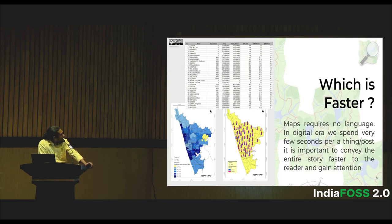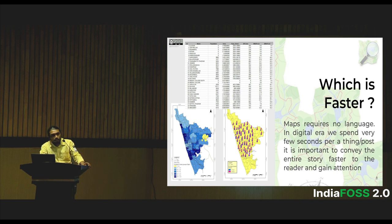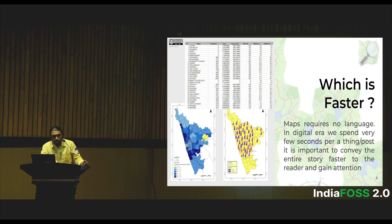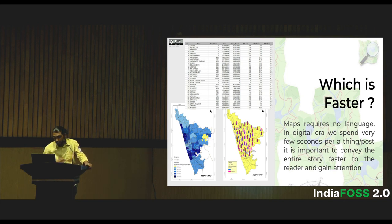Here we can see two different maps and a large table I made from census data — showing the proportion of two-wheelers and four-wheelers in each ward, and population density in a corporation. Identifying patterns from a table is very difficult and time-consuming. And that's just one ward — think of a country level or district level. It's far more complicated. Bringing it into the form of a map makes the work much easier.